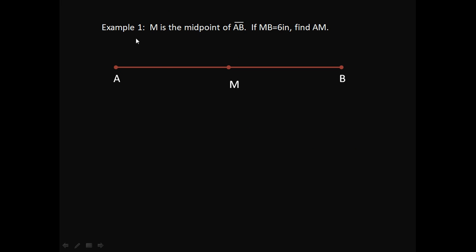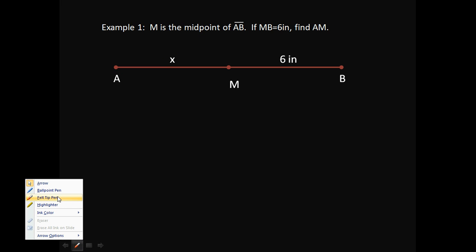Here we go. Example 1, Point M is the midpoint of segment AB. If the length of MB is 6, find the length of AM. Well, this is pretty simple. The idea is that if M is our midpoint, and it's 6 inches over here, we can then figure out what it is over here. But we know that a midpoint divides a line directly in half.